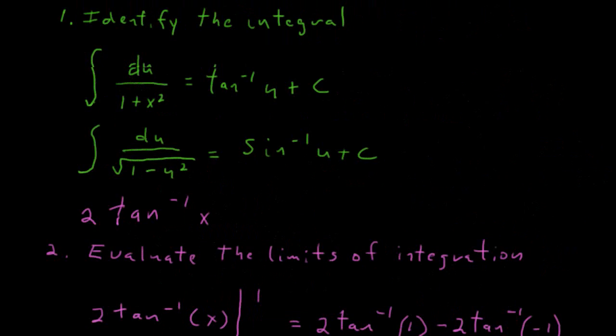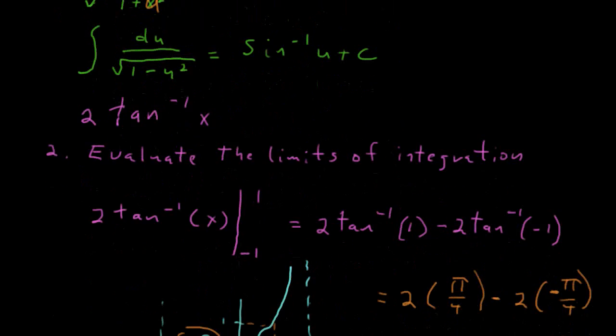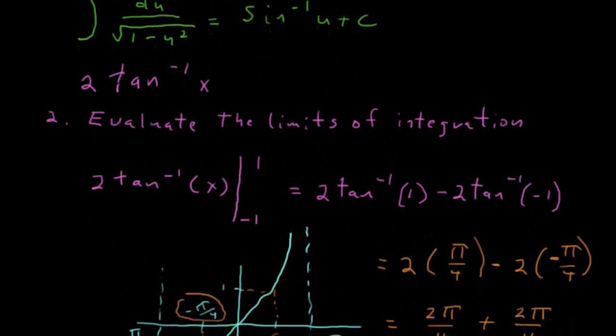Okay, let's just review what the important parts of this problem were. The first one was to identify the integral, and these are integrals that I suggest you memorize. So the integral of du over 1 plus u squared, make that change there, is equal to the inverse tangent of u. That's what we had.